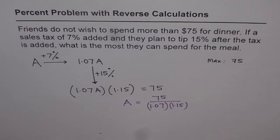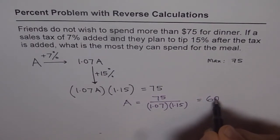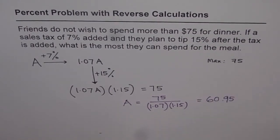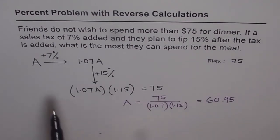175 divided by 1.07, and then divided by 1.15, gives us 60.95. So our answer is A equals $60.95. You can check this: if you start with $60.95, add 7% and then 15%, you should get a number less than or equal to $175. If yes, then that is the right answer.